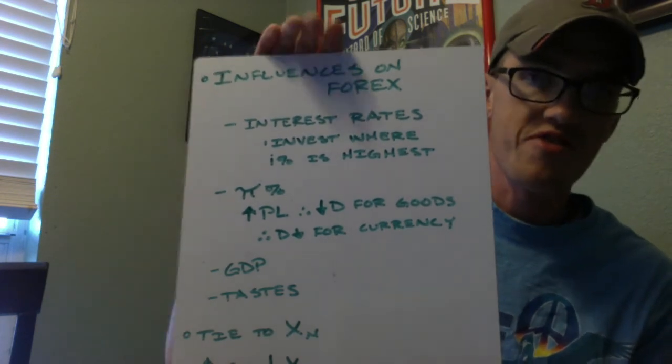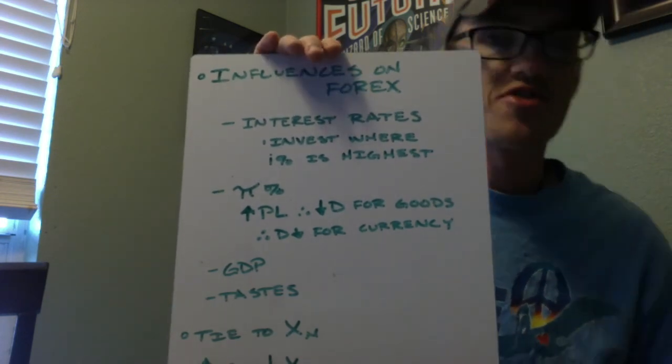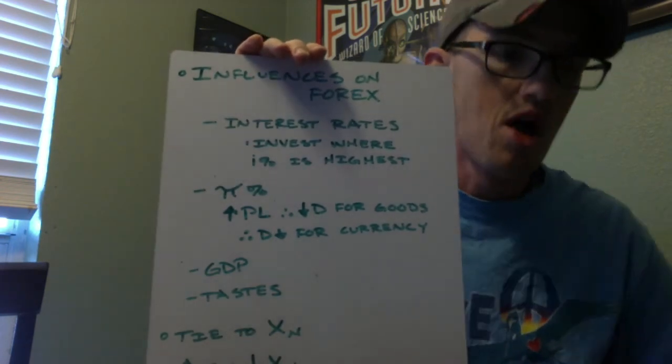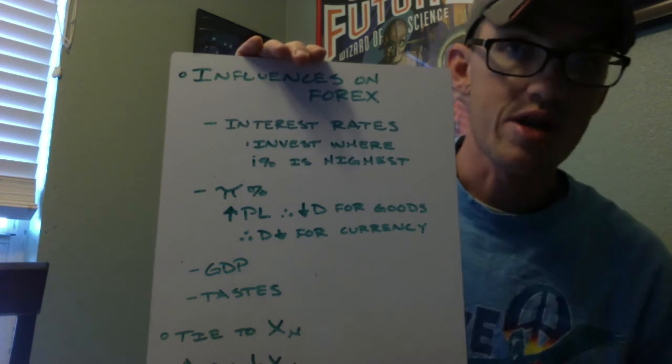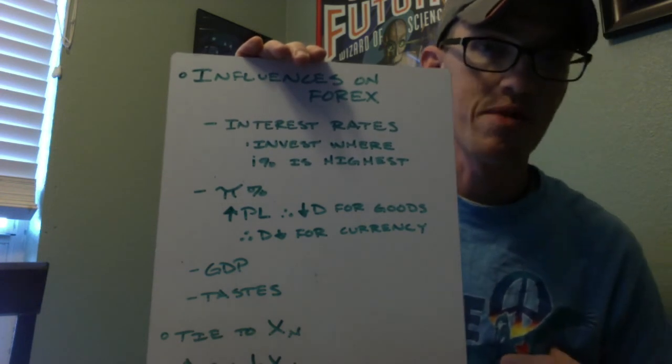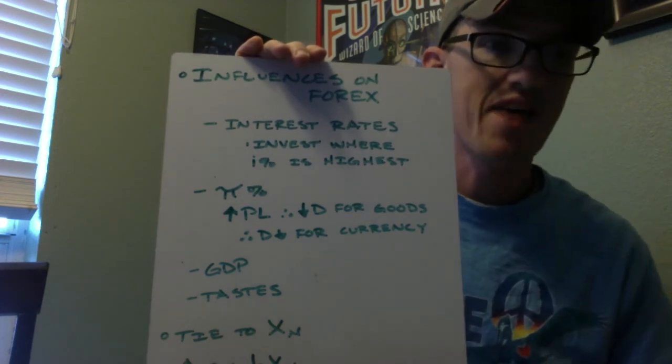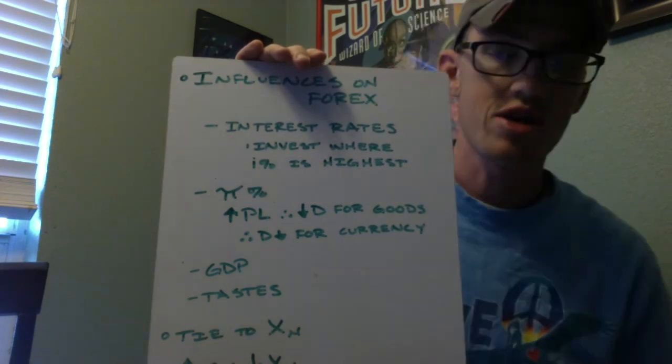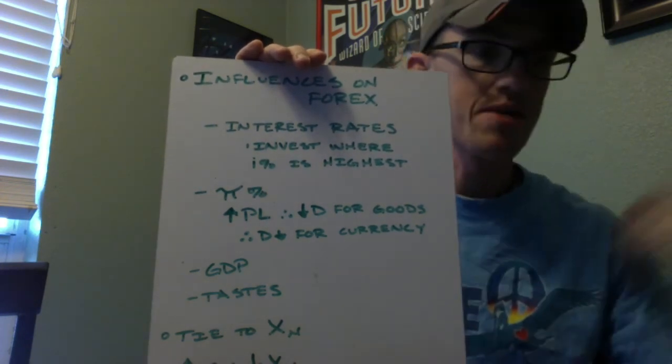So let's talk through an example real quick. If the interest rates in Germany are higher than the United States, obviously I'm going to want to invest in Germany because I get a greater return on my money. To do so, I have to have Euros. So I want to take my dollars, and I want to drop them off on this imaginary exchange rate system. And I want to take up some Euros.